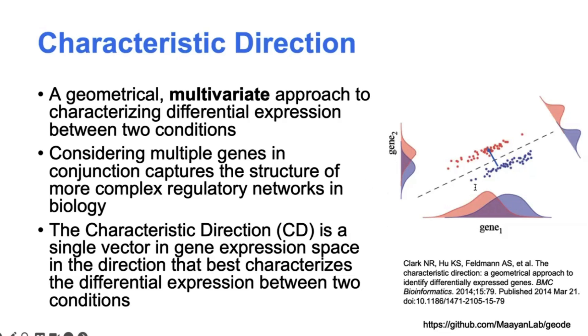They don't consider the covariance that exists across genes. So the other two methods, Lima and D-Seq and most other differential expression analysis methods, they look at each gene independently, and they don't consider the fact that genes have a high correlation in expression. So this method considers that information and takes advantage of it to potentially better identify the differences between the two conditions.